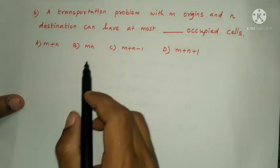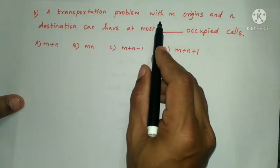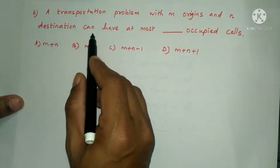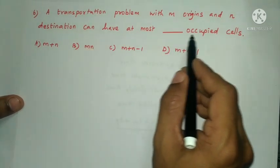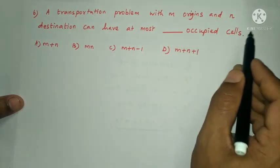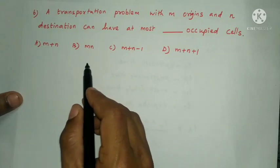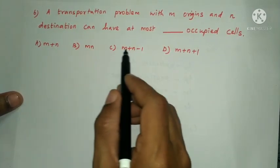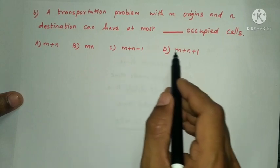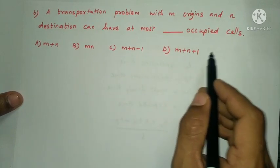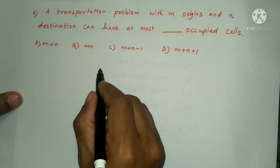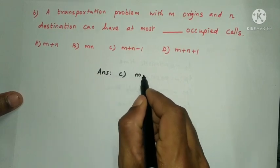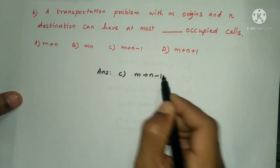Next question: a transportation problem with M origins and N destinations can have at most how many occupied cells? The options are M+1, M×N, M+N−1, and M+N+1. The answer is option C: M + N − 1.